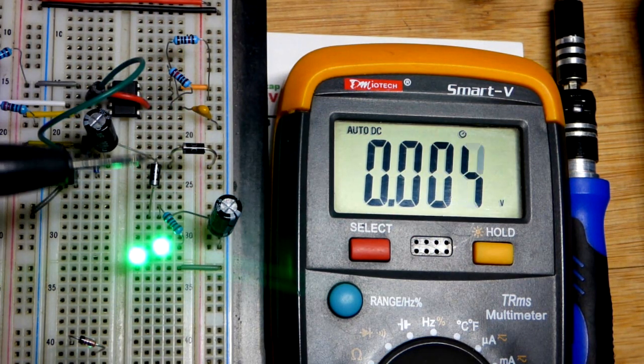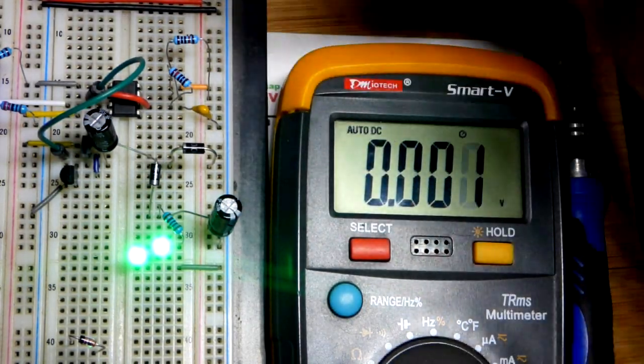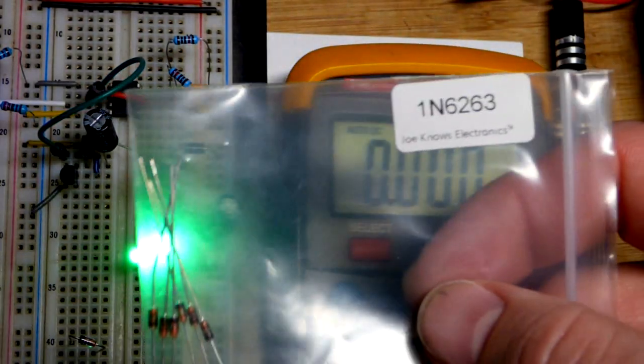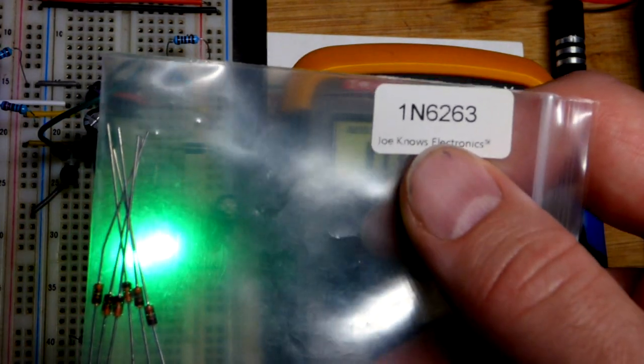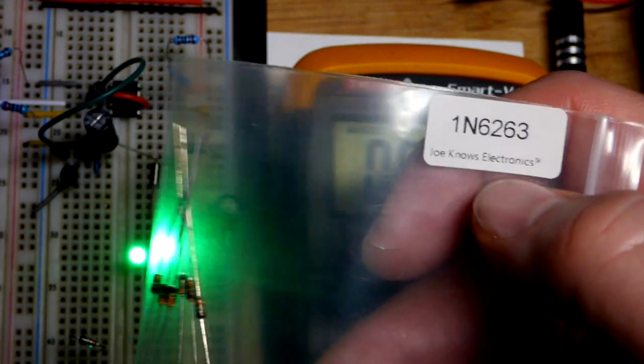So, as I said before, these 1N4001s are in all kinds of kits. If you get a basic component kit, it probably has the 1N4001 in it. Whereas the 1N6263 I had to get from the Joe Knows Electronic Semiconductor Kit.